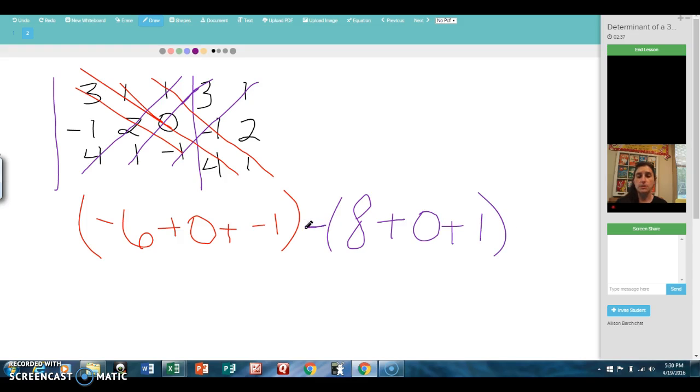So we subtract these two quantities. So I have negative 7. Whoops. That's a very long 7. Negative 7 minus 9. So my determinant is negative 16.